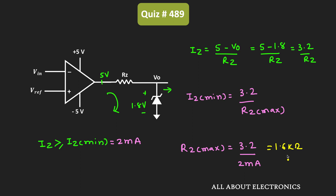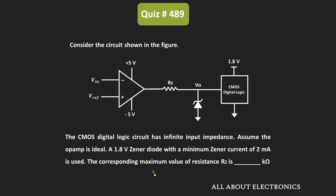If the value of resistor RZ is more than 1.6 kΩ, then the current IZ will be less than IZ minimum. Therefore, the maximum allowable value of resistor RZ is equal to 1.6 kΩ. For the given circuit, the maximum value of resistance RZ is equal to 1.6 kΩ.